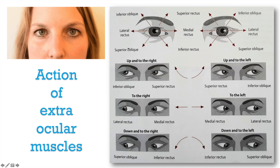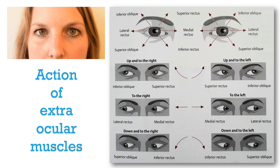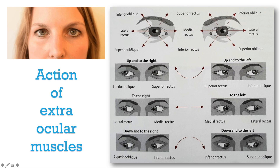Inferior oblique should actually depress the eyeball, and superior oblique should elevate the eyeball — that's what a beginner might think based on the names — but that's not what happens. The nomenclature of these obliques is not according to their action. The names are given according to the origin and direction of the muscle fibers in relation to the globe. Inferior oblique arises below the eyeball and its fibers run below the eyeball. Superior oblique arises superomedially and its fibers run and cross the globe above it. But the action of these muscles is according to the site of insertion and the pull brought about by these muscle fibers.